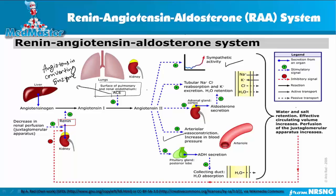The second action of angiotensin 2 is on the kidney tubules — it increases the reabsorption of sodium and increases the excretion of potassium. When sodium reabsorption increases, it increases water retention, which increases blood volume. When blood volume increases, it increases blood pressure, and that's how the kidney gets reperfused — which was the main problem that triggered renin secretion.